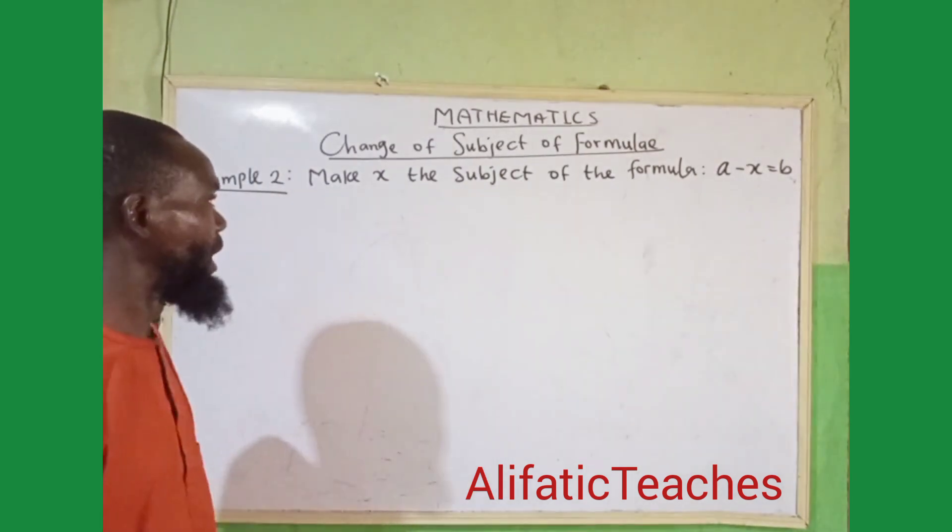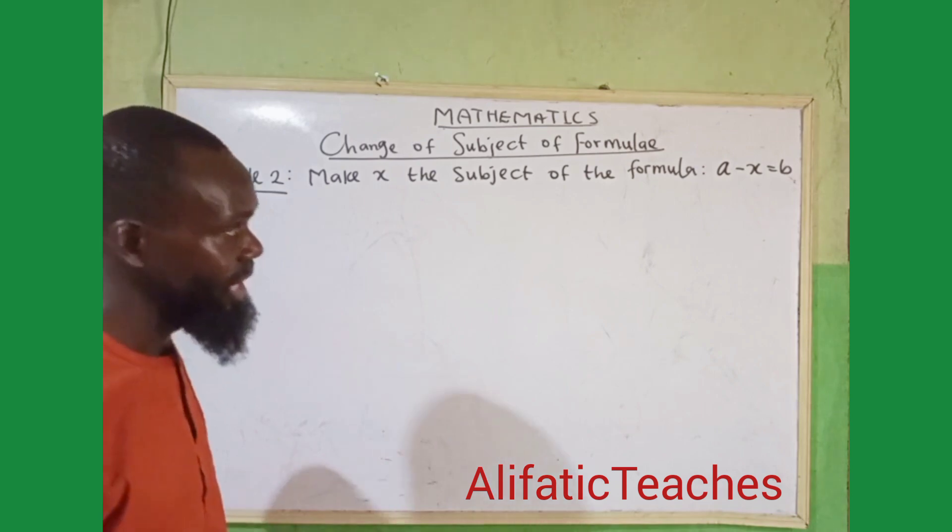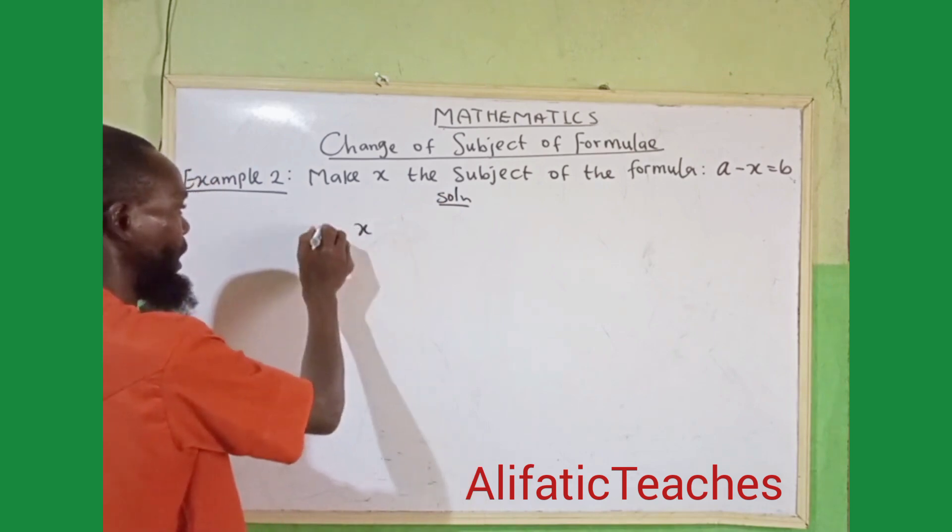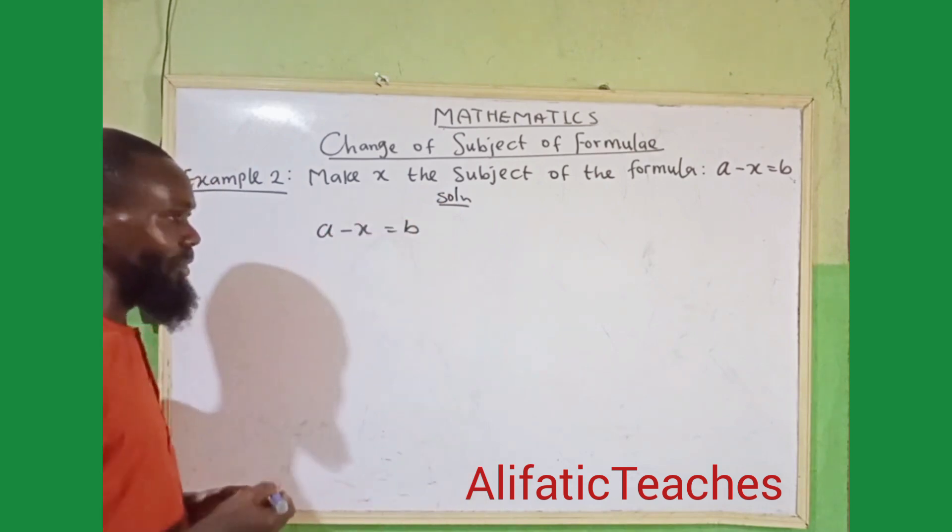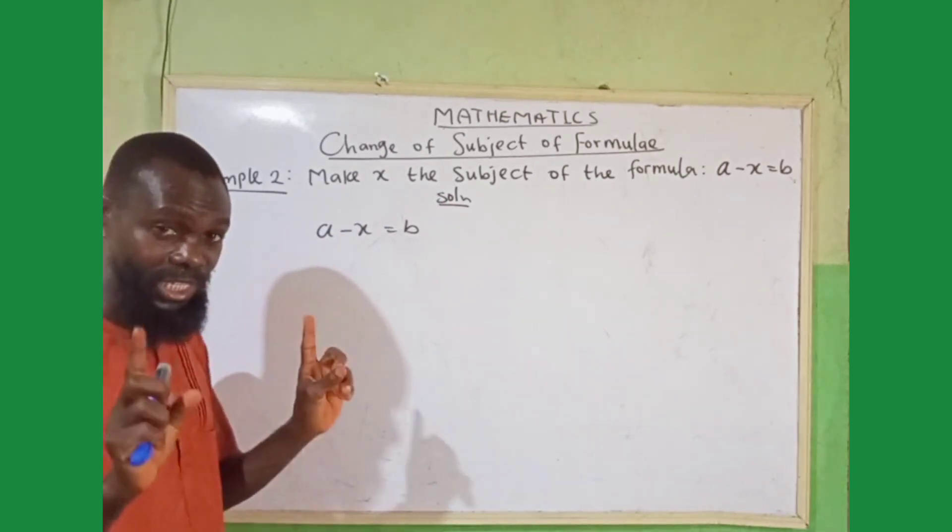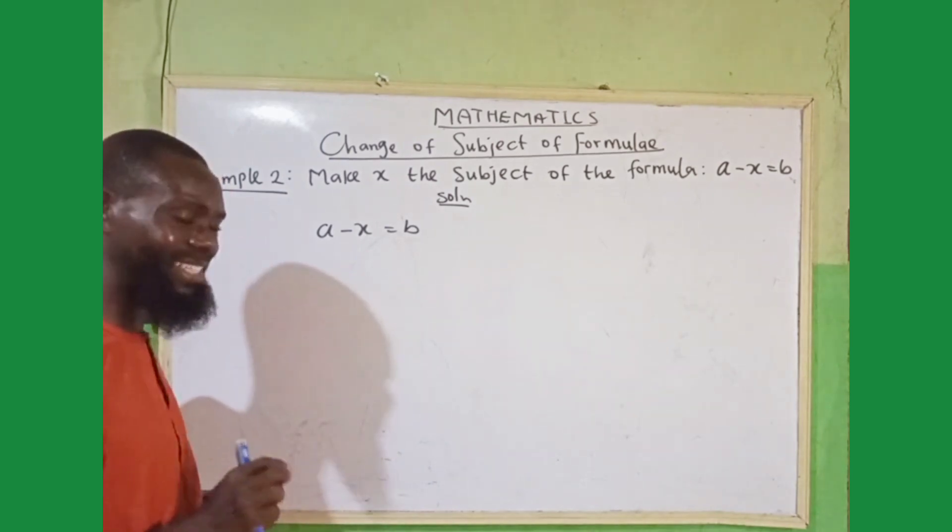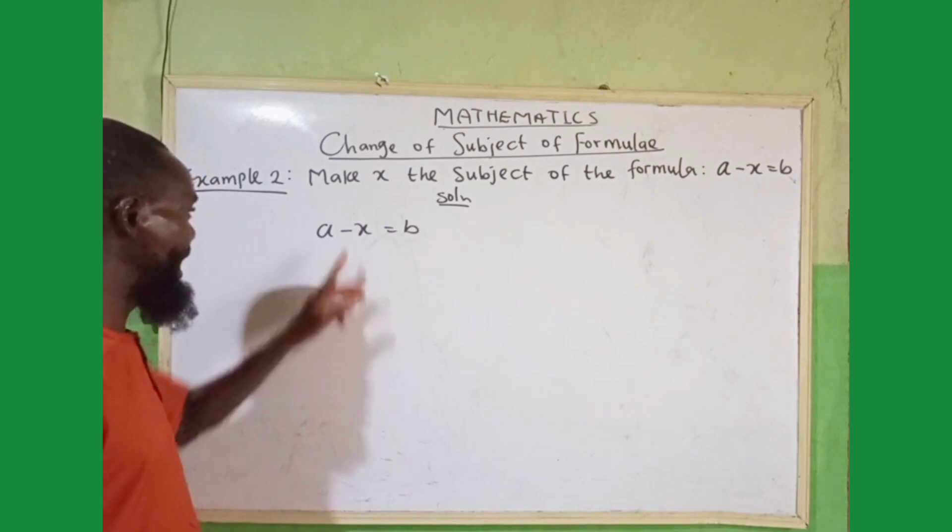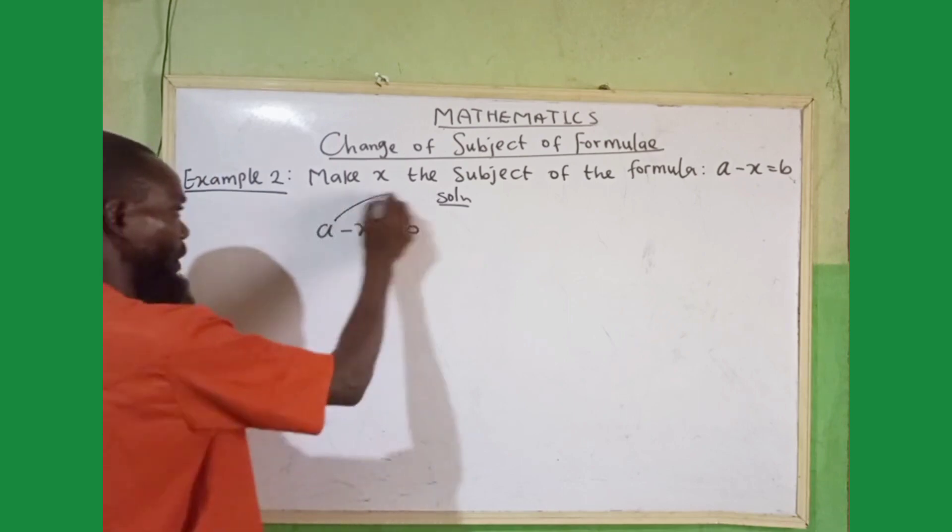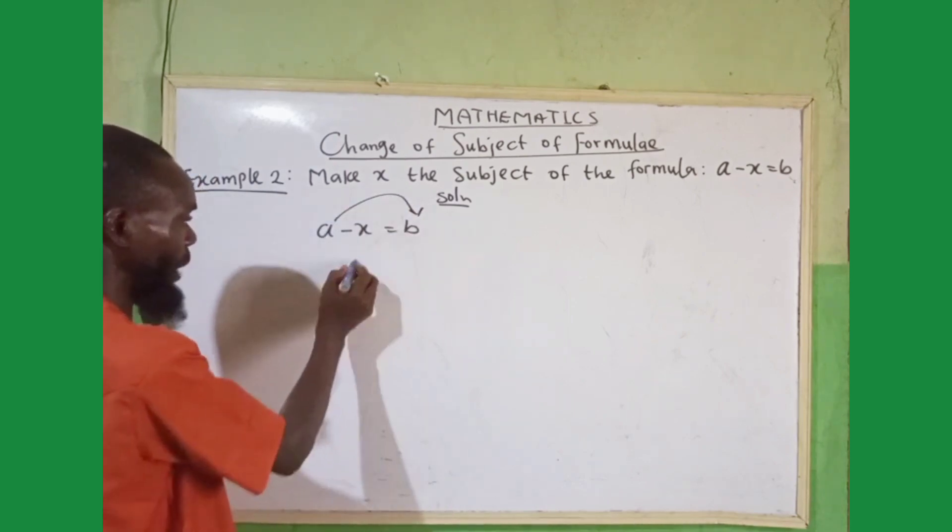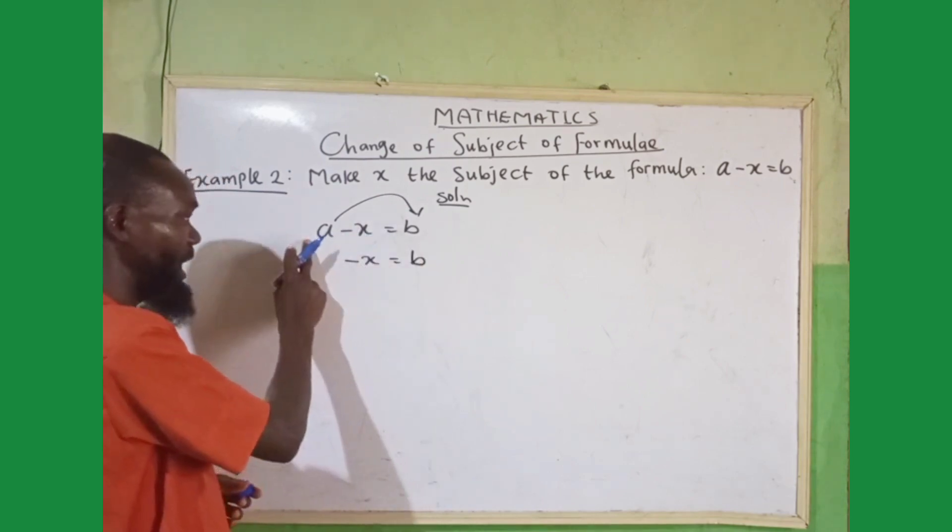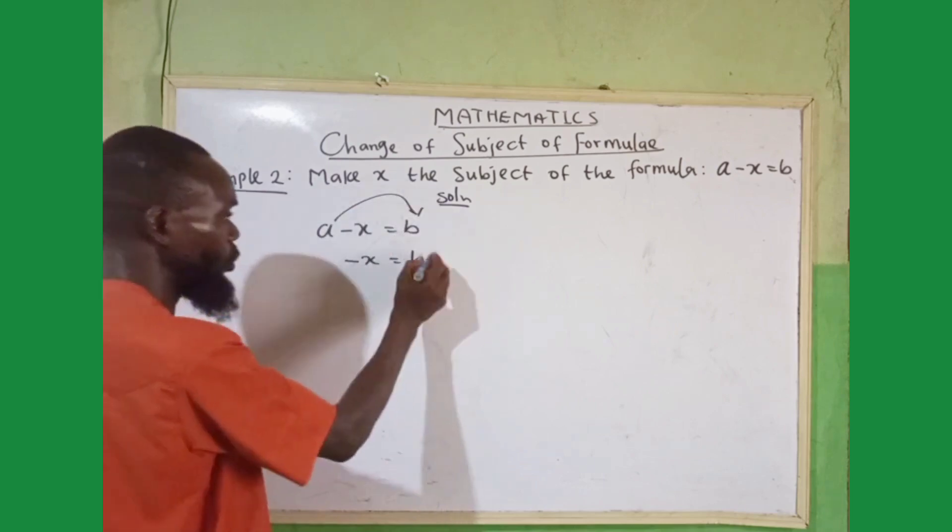Next question: make x the subject of the formula a - x = b. If you look at this, the difference between the first one and the second one is the sign, negative. The first thing to do is to take anything that is joining with your x away. Here, we are having a - x. So this positive a has to move to this point. When it is moving, we are going to be left with -x = b. Then this plus a, if it is crossing, it is crossing to minus a.